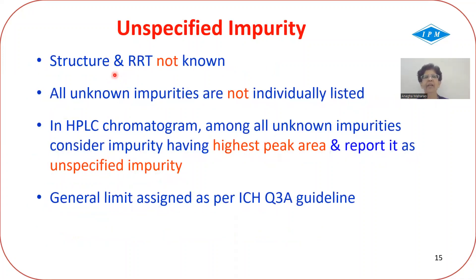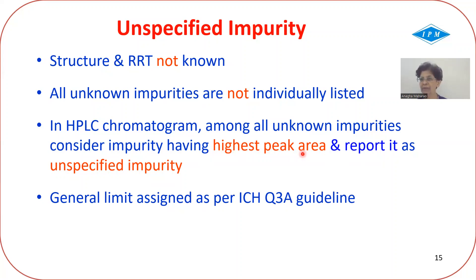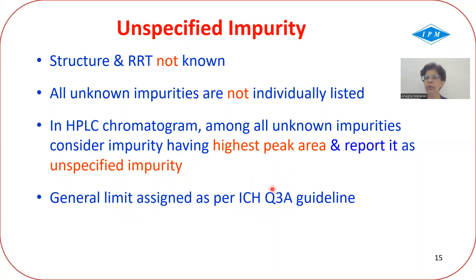The opposite is unspecified impurity, where nothing is specific — you don't know the structure or the relative retention time. When several unknown impurities appear in one chromatogram, you do not list each one individually. Instead, you select the one with the highest peak area among all unknowns and report it as the unspecified impurity. Some companies call this the 'single largest unknown impurity.' Its limit is assigned per ICH Q3A, and all other unknowns would naturally be less than that.